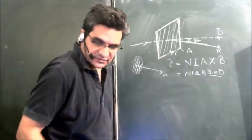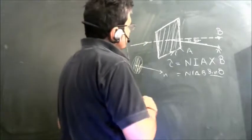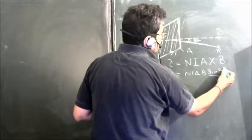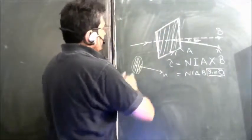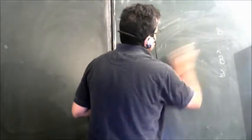Now what is done in case of moving coil galvanometer is that the design is made in such a way that this theta is always 90 degrees. This is done when you have a core.